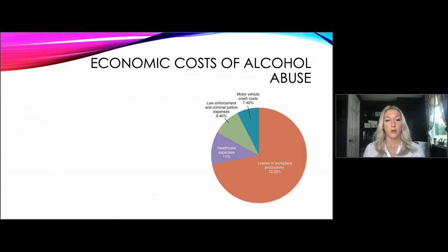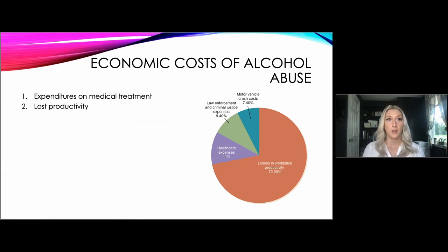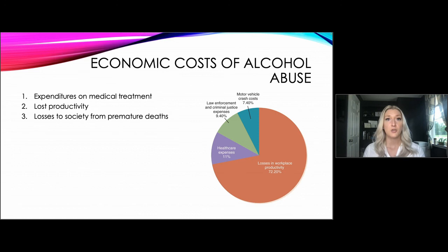When we look at all these statistics, why do we care? There are significant economic costs to alcohol abuse: expenditures on medical treatment, lost productivity from those who abuse alcohol, and losses to society from premature deaths. In 2010, lost productivity cost about $82 billion, early mortality cost $75 billion, crime-related costs were estimated at $25 billion, and car crashes cost society about $13 billion. Alcohol abuse is the third leading preventable cause of death and costs the nation nearly $249 billion every year.